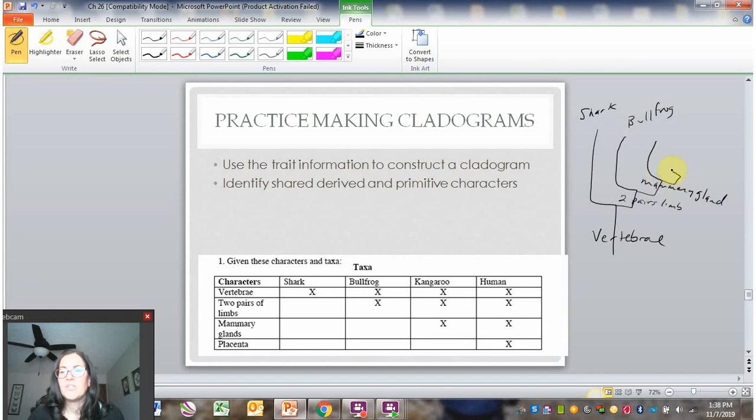Then my next divergence is the human being the only one that has it in this cladogram, placenta. So the placenta now puts the kangaroo in the out-group. Oh whoops, I'd already drawn that. Sorry. So the placenta should be here. Let me do this again. It's too close together.